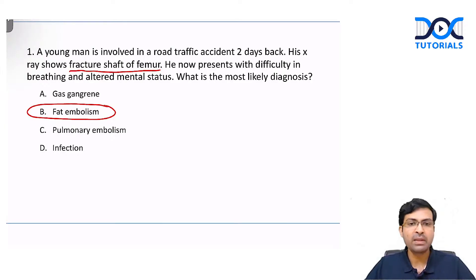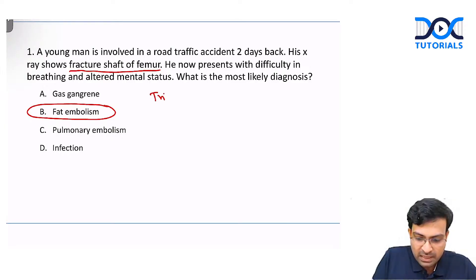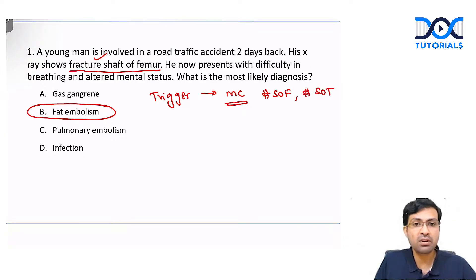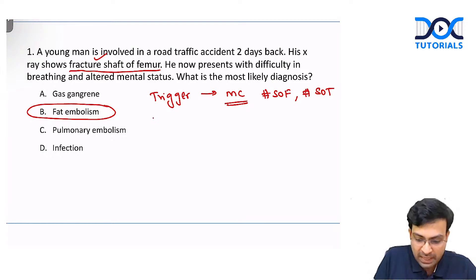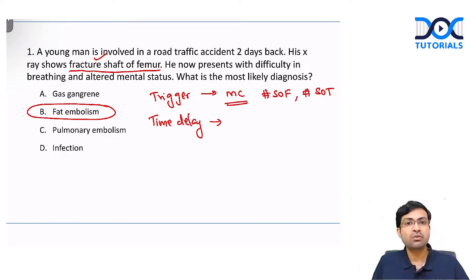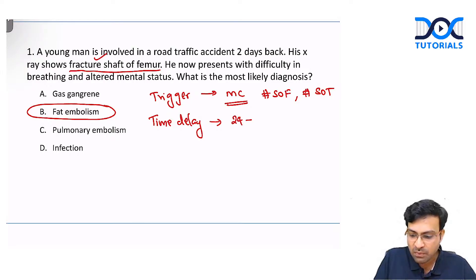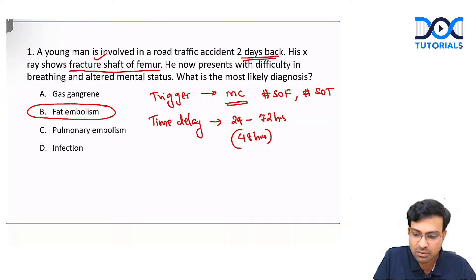To identify fat embolism syndrome, there is always a trigger. The most common trigger is fracture shaft of femur. Other causes include fracture shaft of tibia and burns. There is always a time delay — it never develops immediately. Generally the time delay is between 24 to 72 hours; on average it is 48 hours or two days.